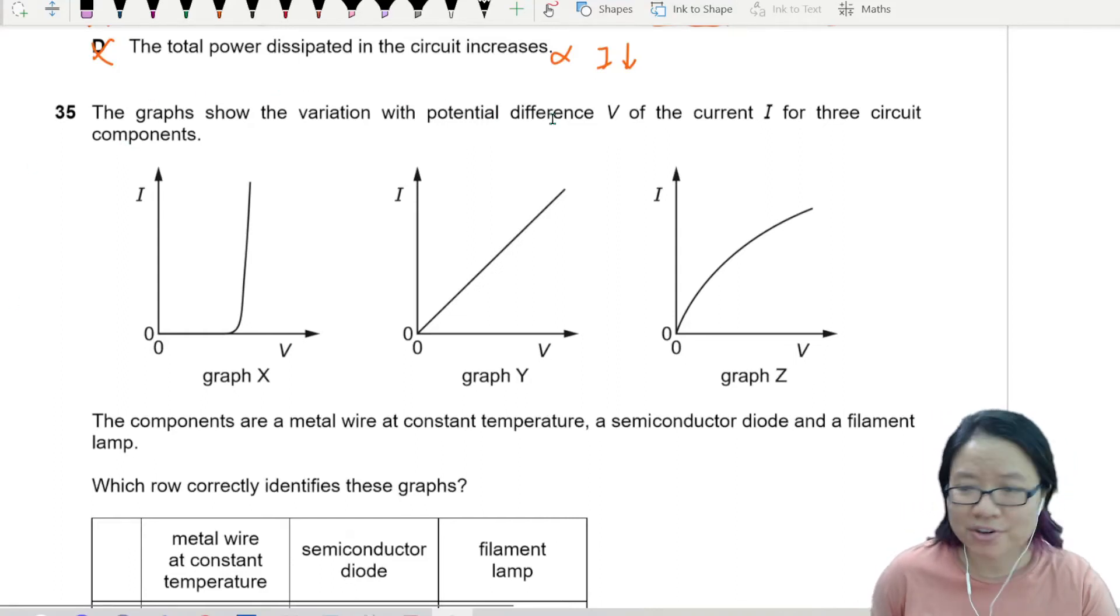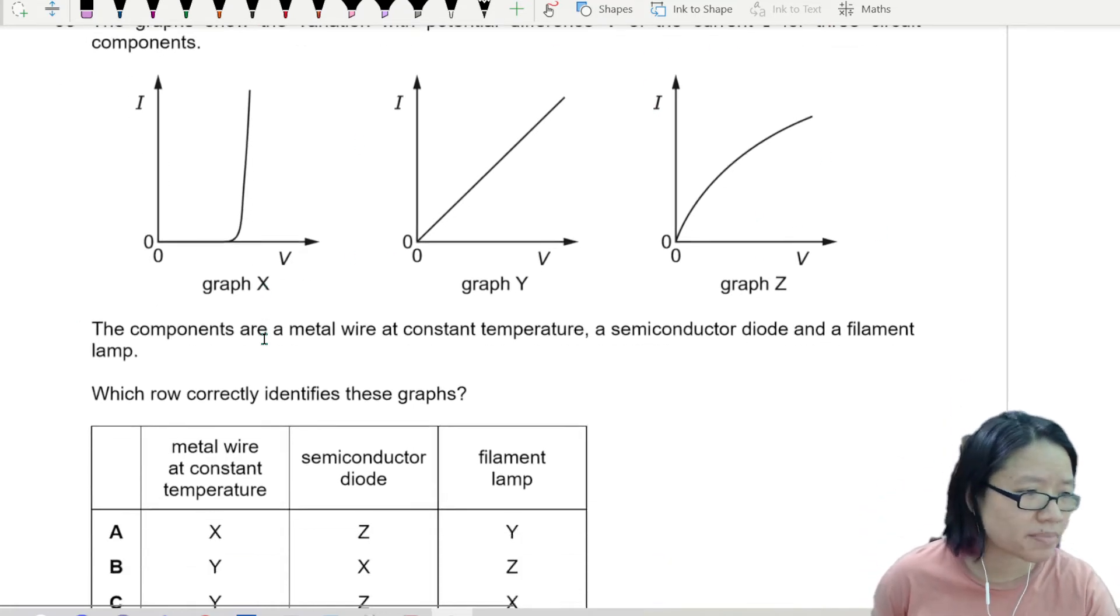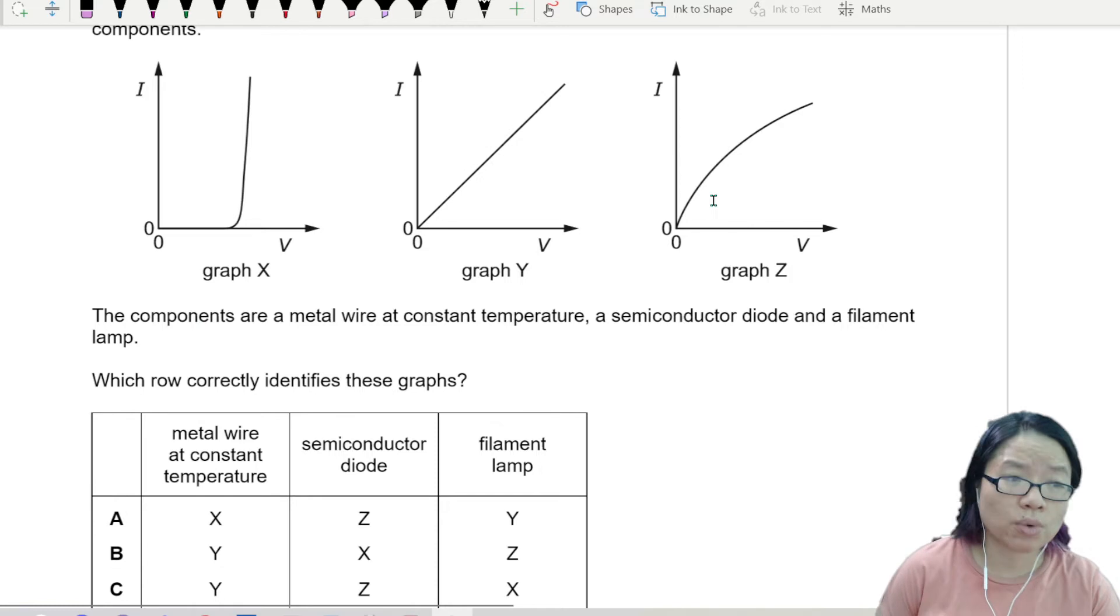The graphs show the variation with potential difference V of the current I for three circuit components. The components are a metal wire at constant temperature, a semiconductor diode, and a filament lamp.